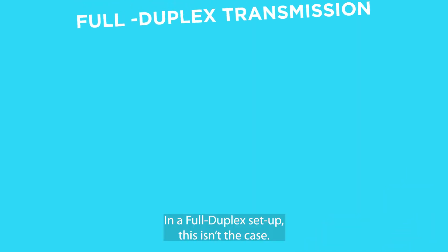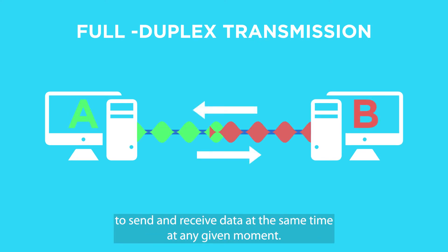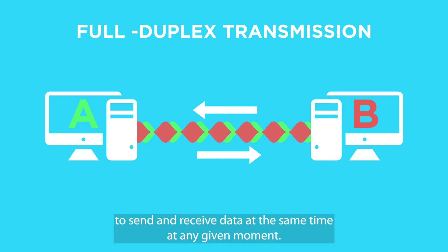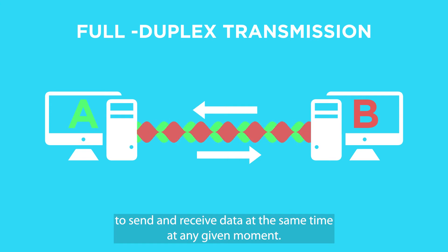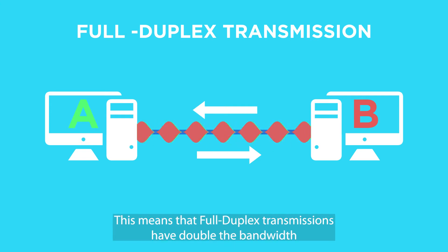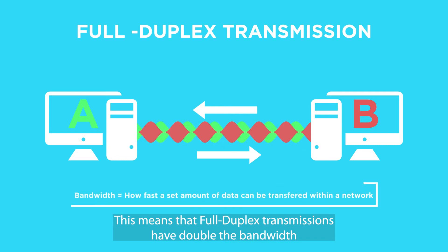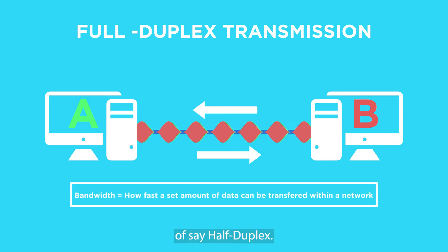In a full duplex setup, this isn't the case. The main difference of a full duplex transmission is the ability to send and receive data at the same time at any given moment. This means that full duplex transmissions have double the bandwidth of half duplex.